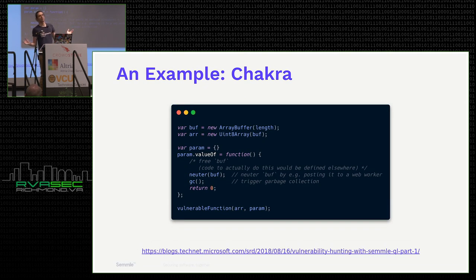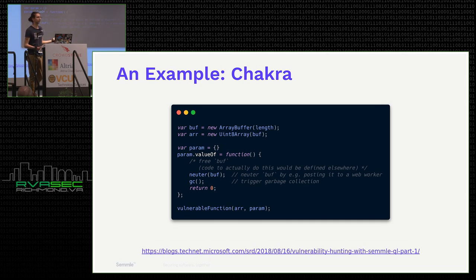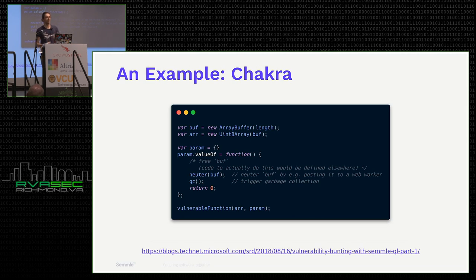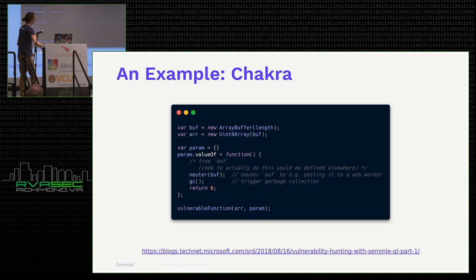This is an illustrative example of what the JavaScript exploit looked like. You can see an array buffer at the top, creating a valueOf function for the object that frees the buffer and then calling the vulnerable function later on. Microsoft found this vulnerability and diagnosed it — they found the root cause — but wanted to know whether they had any similar mistakes elsewhere in the code base.